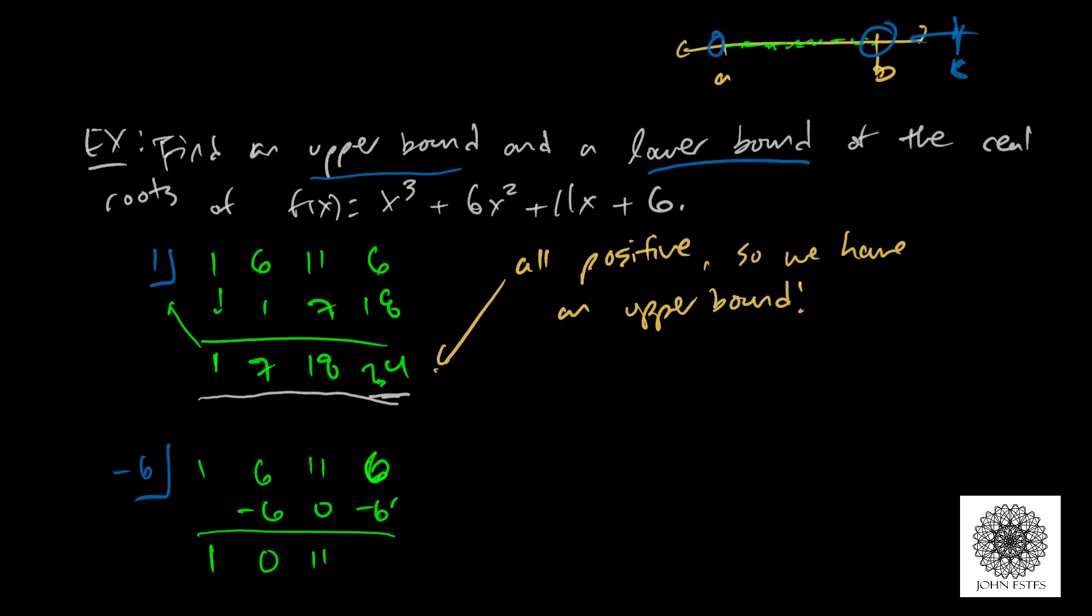0 times negative 6 is 0, so I add to get 11. 11 times negative 6 is negative 66. So I add to get negative 60.